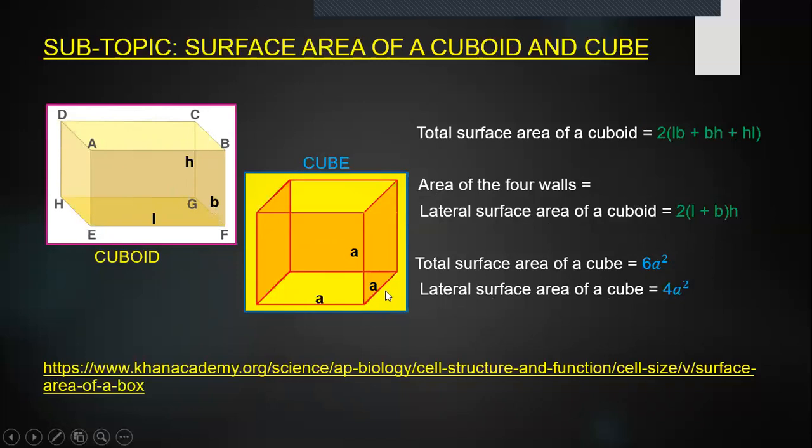Similarly, the total surface area of a cube is going to be 6a². Every face is a square and the area of every face is a². Since there are six faces, all of them added together are going to lead to 6a². And the lateral surface area of a cube is going to be 4a².